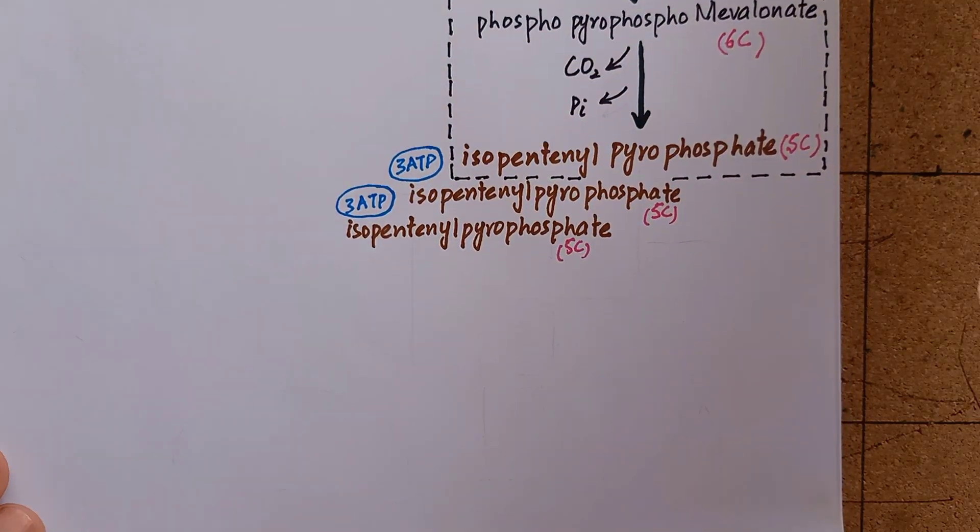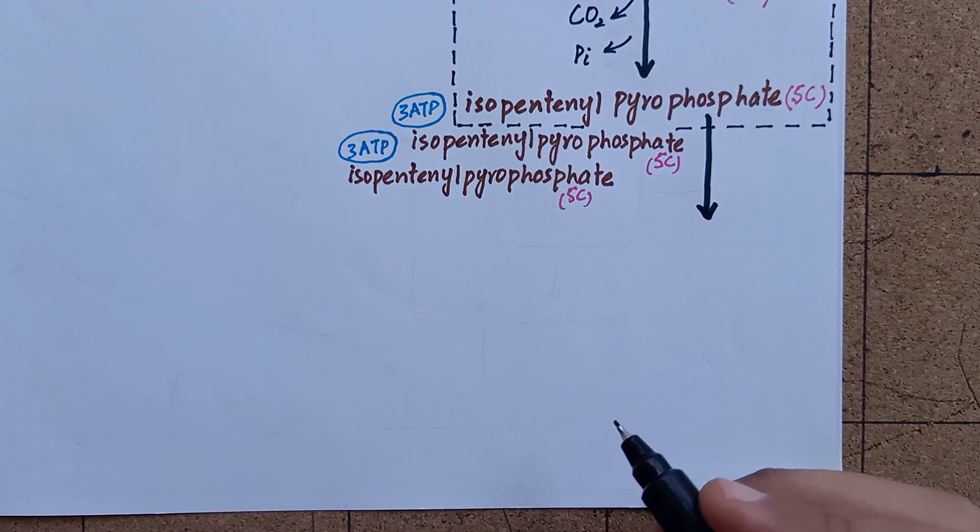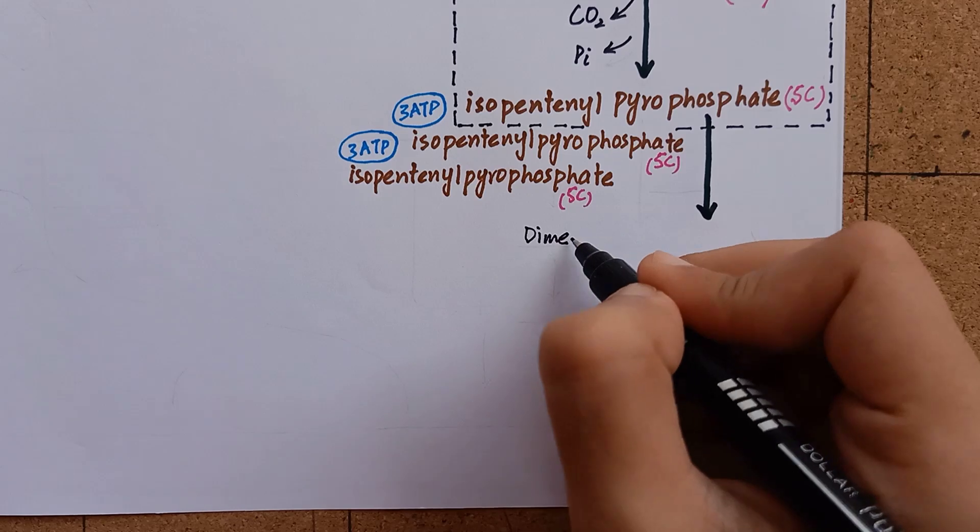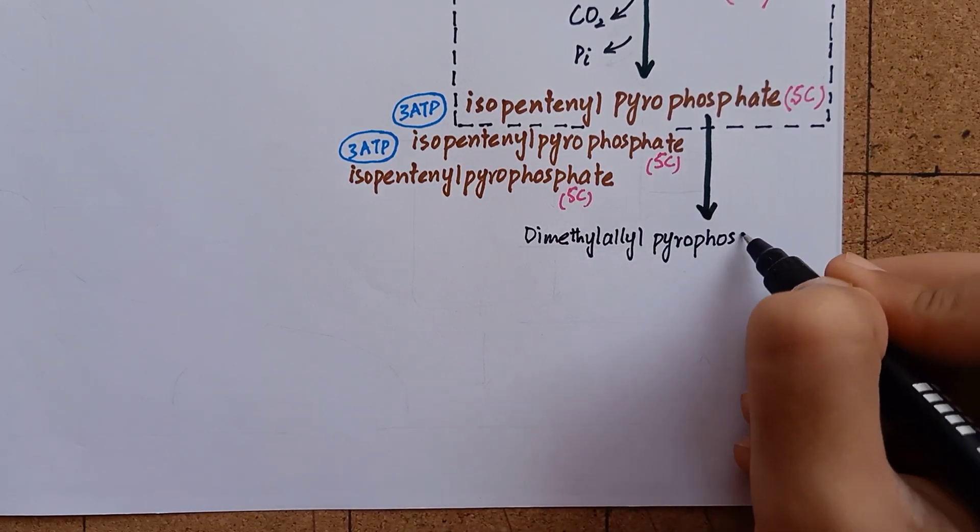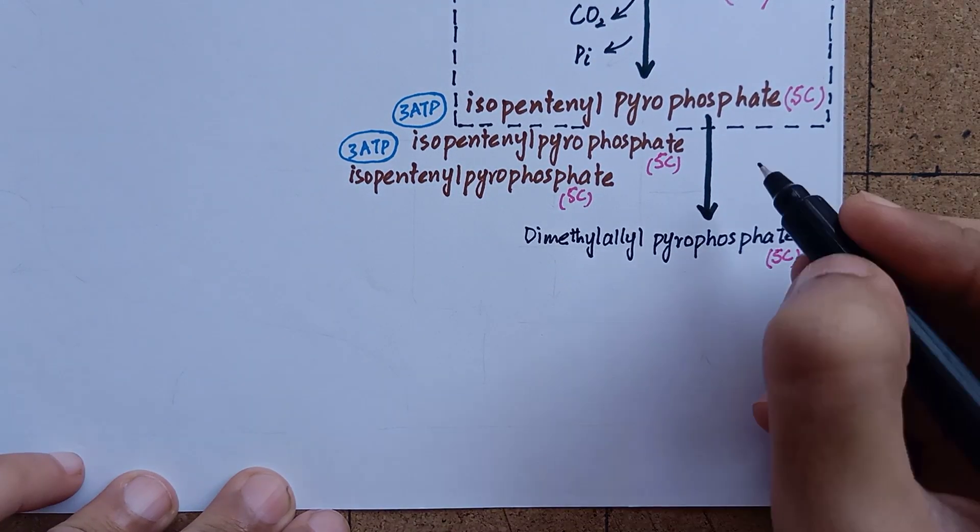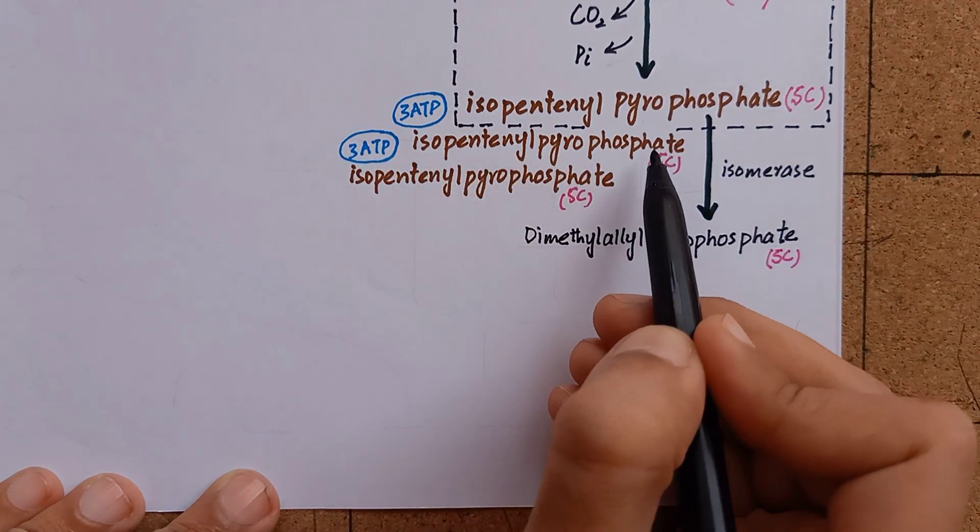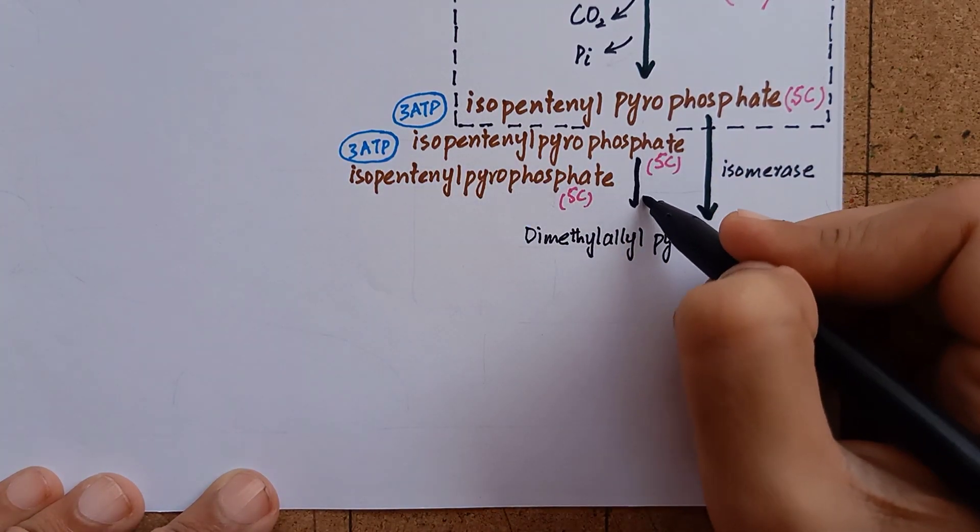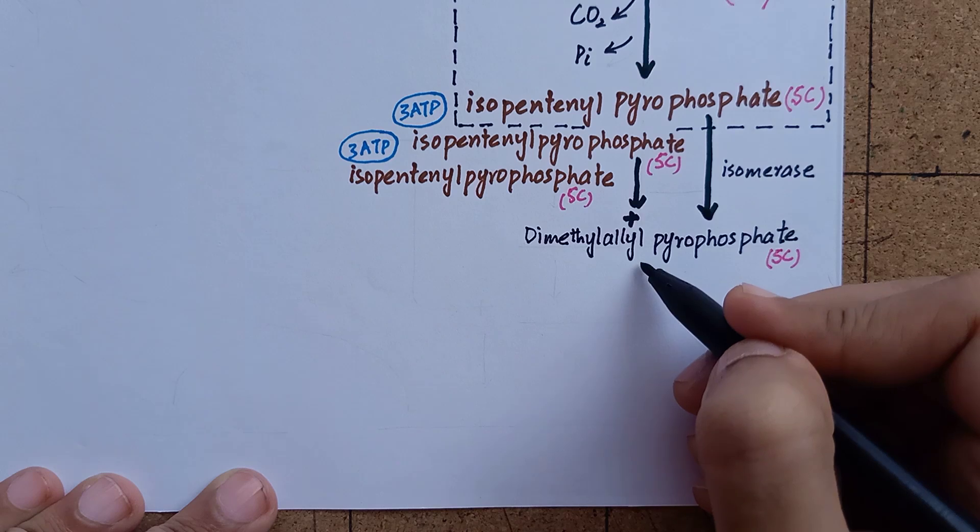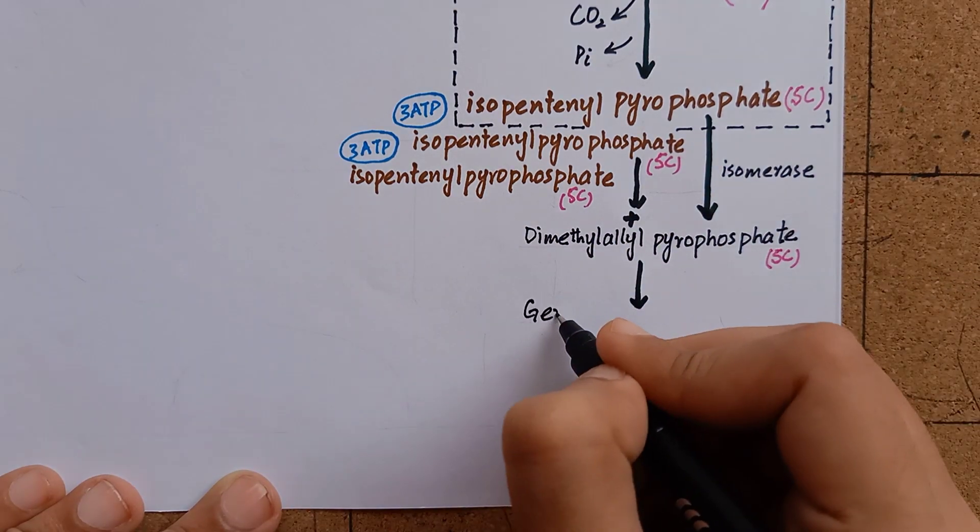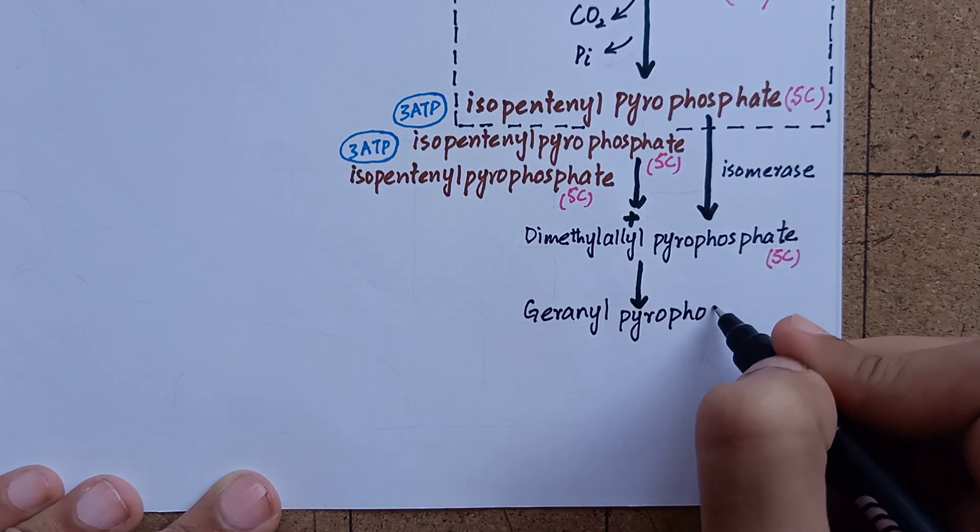One of the molecules of isopentenyl pyrophosphate will transform its structure and isomerize to dimethylallyl pyrophosphate. These two 5-carbon isomers, that is isopentenyl pyrophosphate and dimethylallyl pyrophosphate, condense together to produce geranyl pyrophosphate, which is a 10-carbon compound.